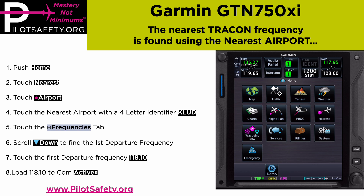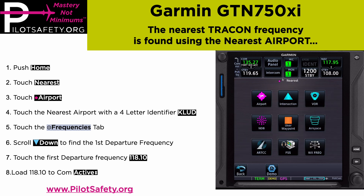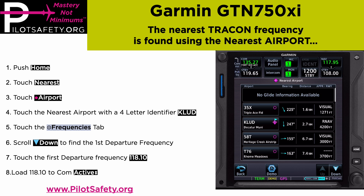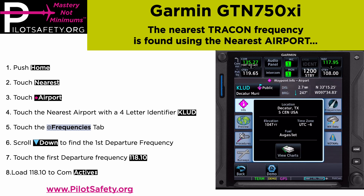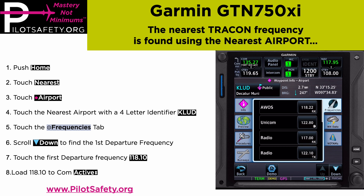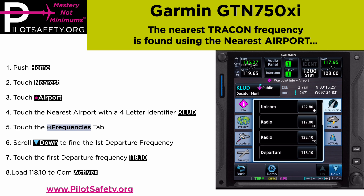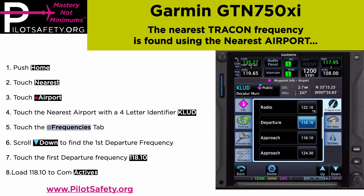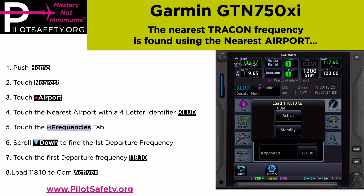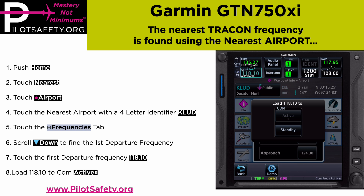Let me show you how quick this is: Home, Nearest, Airport. Look for K-L-U-D, Frequencies, scroll down, find departure 118.10, and touch active. And that's it.